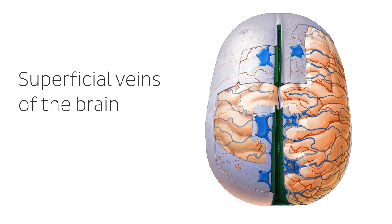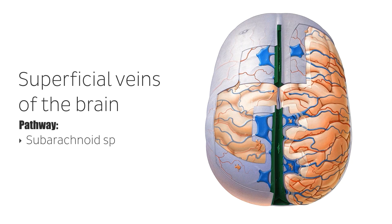Before we move on to talk about the superior cerebral veins in a bit more detail, I just wanted to talk through the pathway of the superficial veins of the brain using this cranial view of the cerebrum and the superior cerebral veins of the brain. In contrast to most of the body, the superficial veins of the brain do not follow the arteries. Instead, from the structures they drain, their path takes them across the brain's surface in the subarachnoid space.